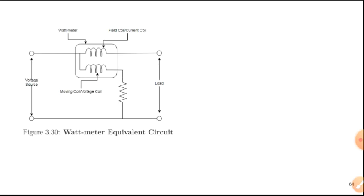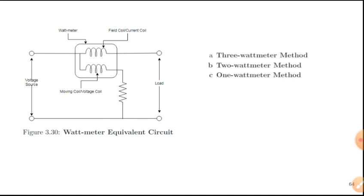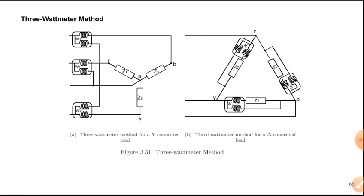In this chapter we will discuss three different categories of methods for measuring power in three-phase systems. The first is the basic 3-wattmeter method. Then we have the 2-wattmeter method and the 1-wattmeter method.